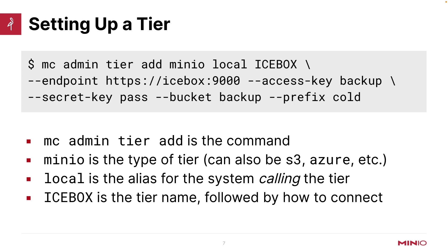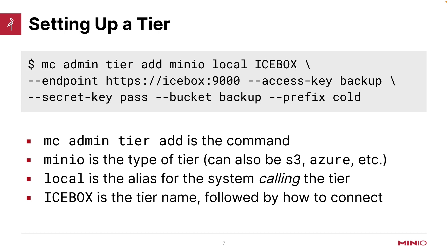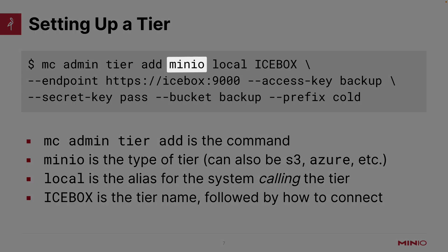Let's take a look at actually setting up a tier. I'm going to use the MC admin set of commands. What this should be telling you is that I'm setting this up server-wide. When you set up a tier, it is available for the entire server. The object lifecycle management rules are for a particular bucket, and we'll see how we set that up in just a minute. But setting up the tier is server-wide. I'm adding this tier and the type of tier is MinIO — that's not my alias in this case, this is actually the type of tier. You can also use S3 or Azure; take a look at our documentation to see all the different types we support. Local is the alias — this is the server that's going to use my tier.